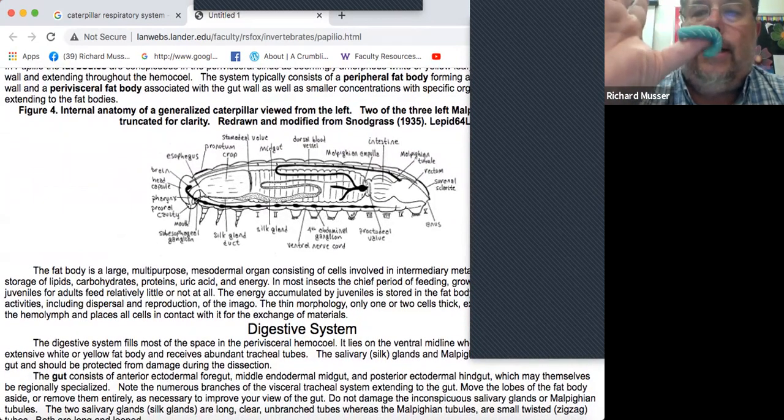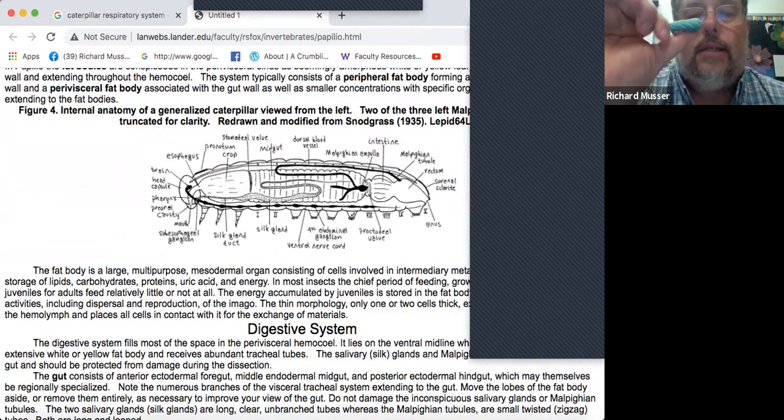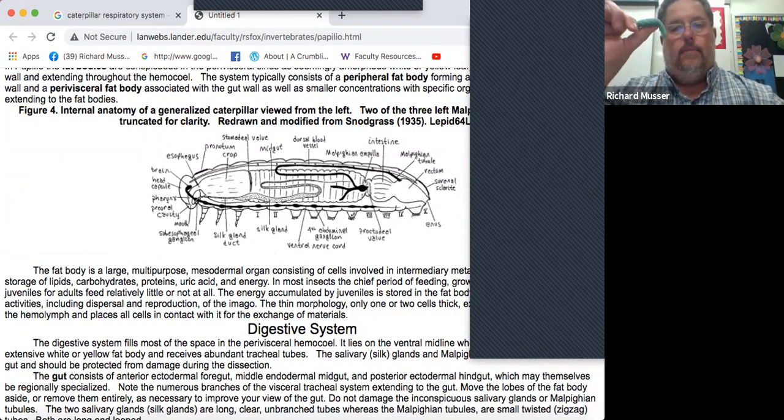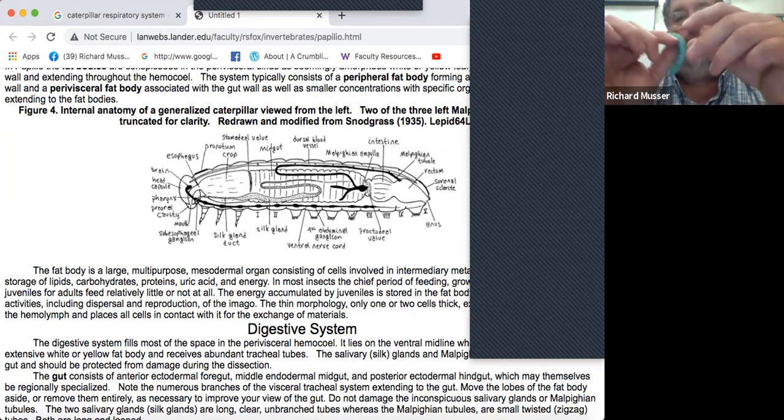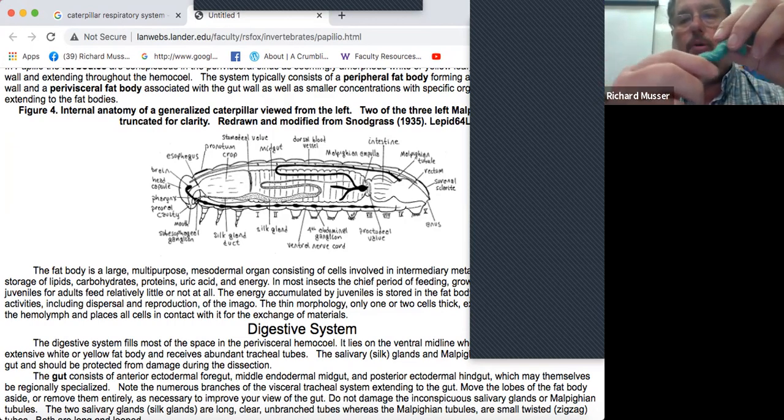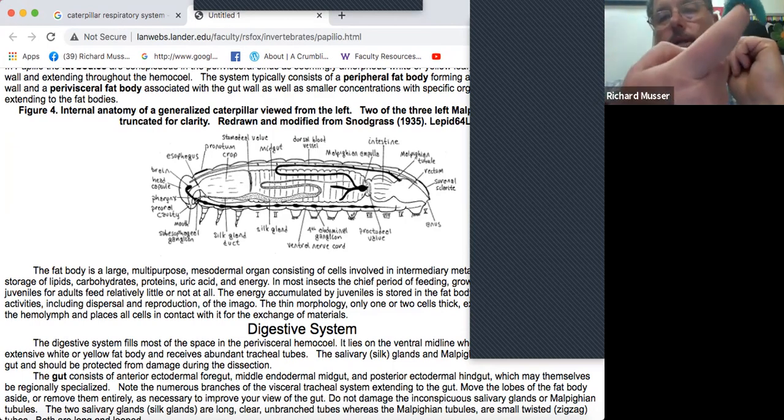You can kind of think of caterpillars as inside out and upside down in comparison to us. Their skeleton or exoskeleton is on the outside of their body. They don't have an internal skeleton like us. That's why they're inside out compared to us. Their muscles attach internally to their exoskeleton. They use hydraulics to pump water and fluids around to help move. They're upside down because their nerves are on the front side while our nerves are on our back side.